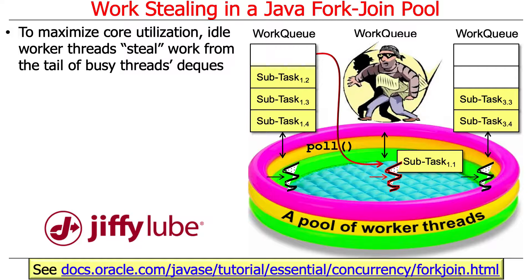Here's the interesting part: to maximize core utilization, idle threads will steal work from the tail of other threads that are busy and haven't cleared out their deck yet. It'll steal from the tail of the busy threads' decks. We push and pop from the front of the deck, but when we don't have anything else to do, we steal from the end of the deck. This addresses how things don't get neglected, because if they get stuck at the end of the deck, someone else will come along and steal them.